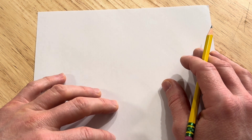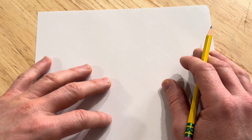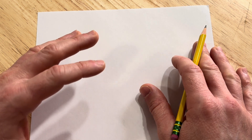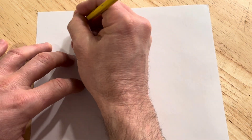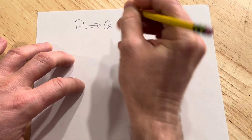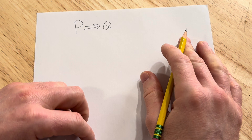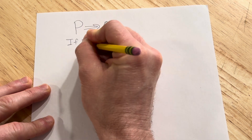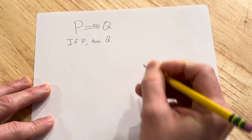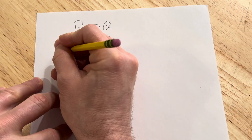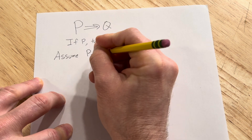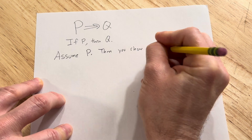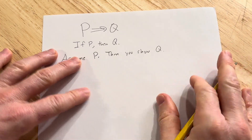This is a video where we discuss what is called direct proofs. We're going to do at least two examples of direct proofs. A direct proof is used to prove a statement of the form P implies Q. To prove a statement like this — if P then Q — what you do is you assume P is true, and then you show Q is true via some steps.